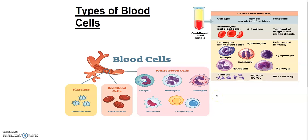The next thing we discuss is platelets. You can see how their function works — blood clotting. Their number is 2,50,000 to 4,00,000; they vary. They are often found without a nucleus and are small in size. As WBCs are large in size, platelets are small in size. They are irregular-shaped cells.